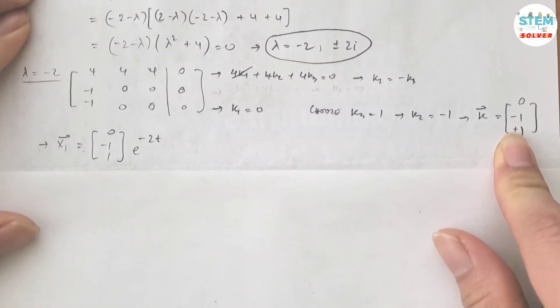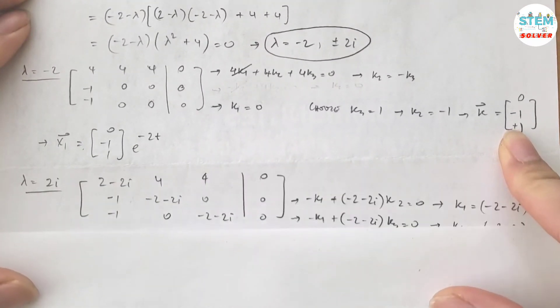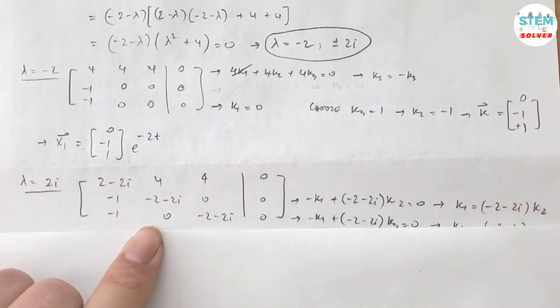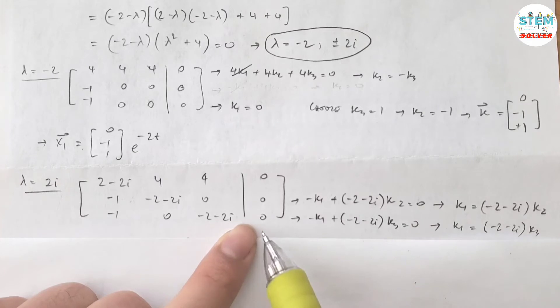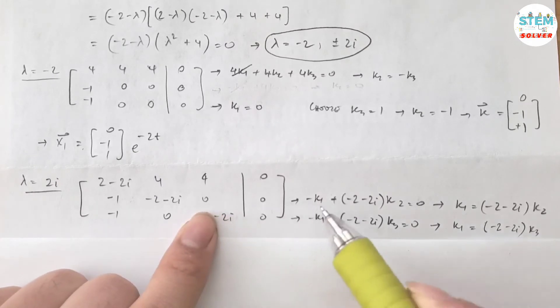Now you are going to do the same thing for lambda equals positive 2i. Plug it into A-lambda-I that gives you this matrix augmented with 0. So again, let's see, use the second equation.